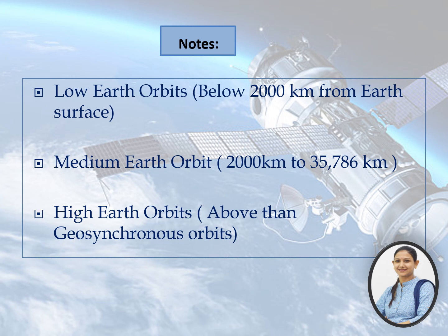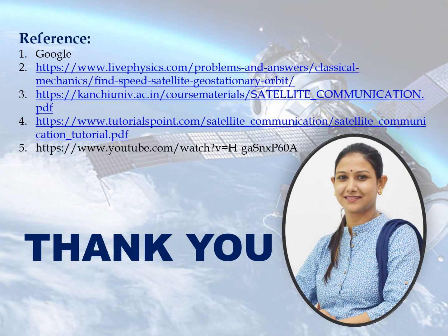On the basis of distance from the earth's surface, the orbits are categorized into three categories: low earth orbits, which are below 2000 km from the earth's surface; medium earth orbits, from 2000 to 35,786 km from the earth's surface; and high earth orbits, which are above the geosynchronous orbits. We will discuss these three types of satellites and orbits in our next video. Thank you.